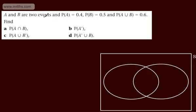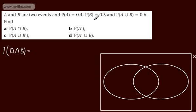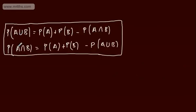We're told A and B are two events where the probability of A is 0.4, probability of B is 0.5, and the probability of A union B is 0.6. We need to find: A) probability of A intersection B, B) probability of not A, C) probability of A union B', and D) probability of not A union B. Using the rearranged formula, P(A∩B) equals 0.4 plus 0.5 minus 0.6, giving us 0.3.